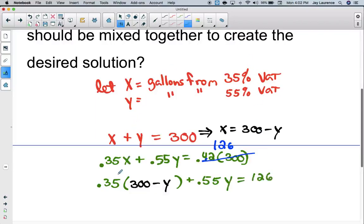So now I'm going to distribute the 0.35. That should be 105 minus 0.35Y plus 0.55Y. That's going to equal 126.